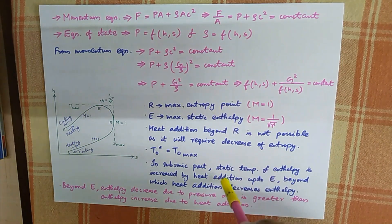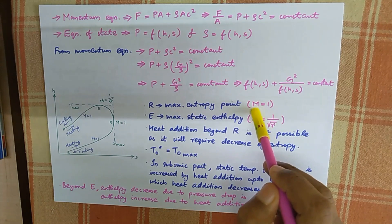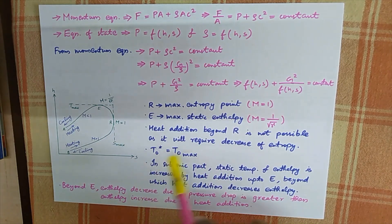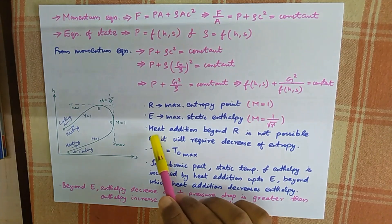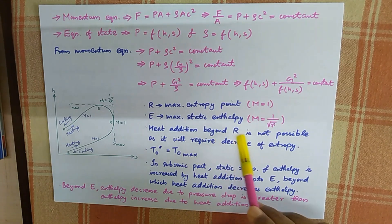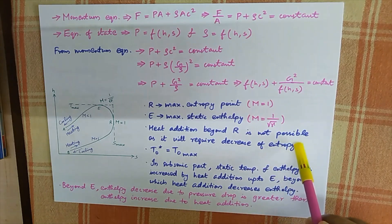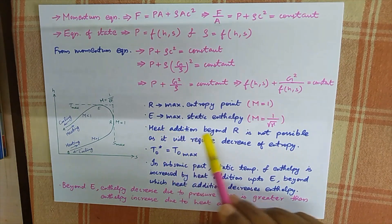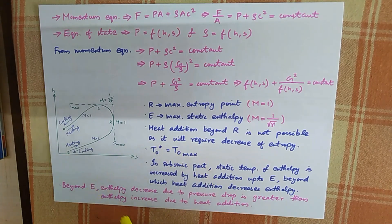Looking at the characteristics of the Rayleigh curve: point R is the maximum entropy point, where the Mach number M equals 1. Point E is the maximum static enthalpy point, where M equals 1 divided by the square root of gamma. This is an important point. Heat addition beyond point R is not possible, as it would require a decrease in entropy, which violates the second law of thermodynamics. Point R also corresponds to the maximum stagnation temperature — this is the critical value.